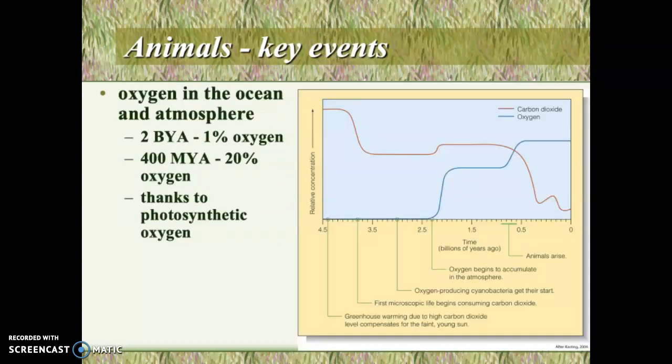Animals are multicellular organisms, and they are consumers — they require food and oxygen to exist. Looking at Earth's history, in the very early Earth the oxygen level is quite low in the ocean and atmosphere. Early life has no oxygen to speak of in the atmosphere; it's all in the ocean. By about 2 billion years ago, we're at about 1% oxygen, built up by the activity of photosynthesizers. By about 400 million years ago, we're at about 20% oxygen — very close to modern levels of about 21% today. This is thanks to the photosynthesizers, or producers, discussed in the previous set of slides.